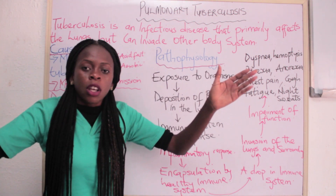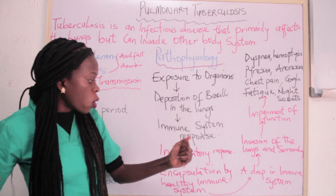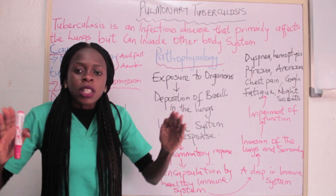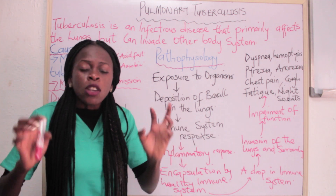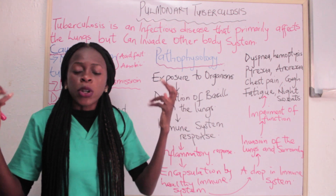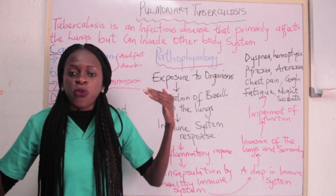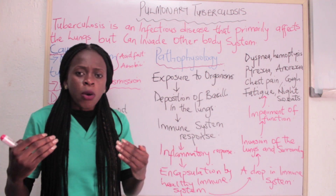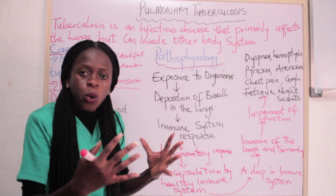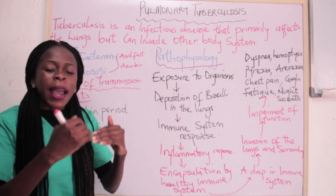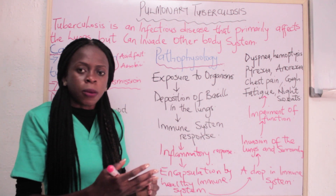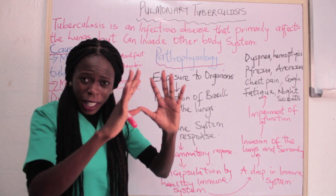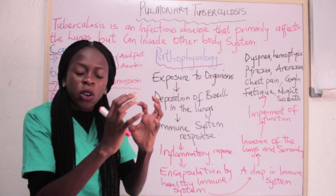When the bacilli reach the lungs, there is an immune system response. The immune system responds by sending leukocytes — the cells that help our body fight against bacteria and infection. Leukocytes are sent to that area, creating an inflammatory response. When the inflammatory response is created, if the person has a healthy immune system, there is going to be an encapsulation of that organism.